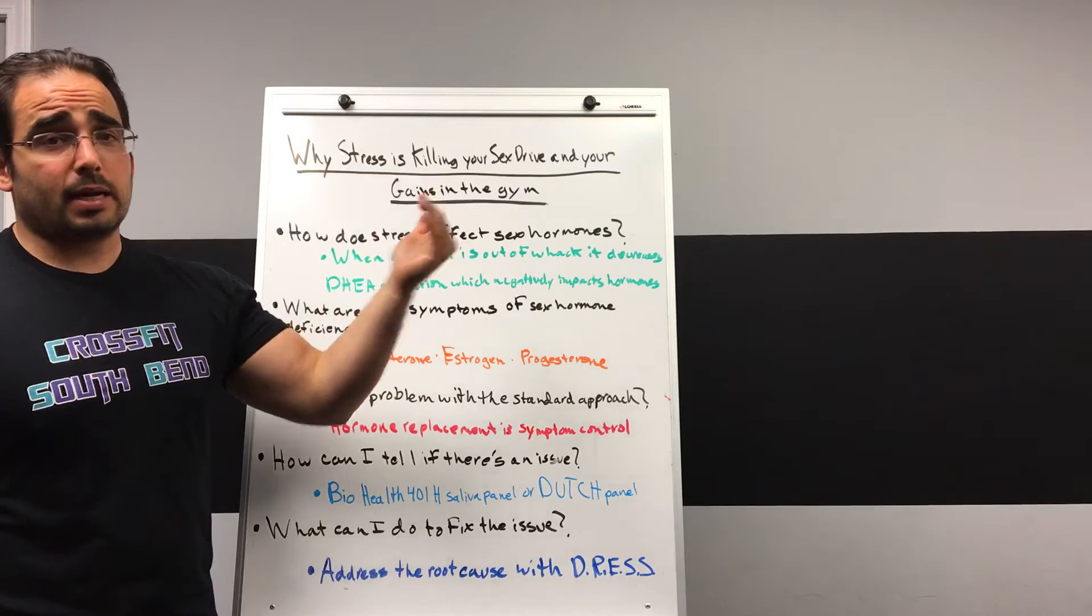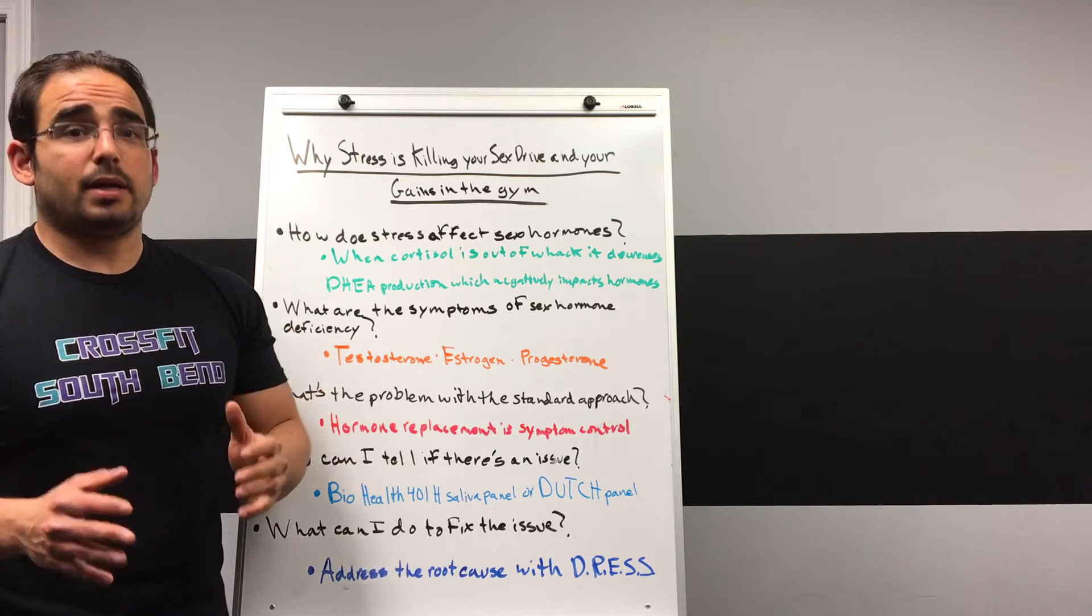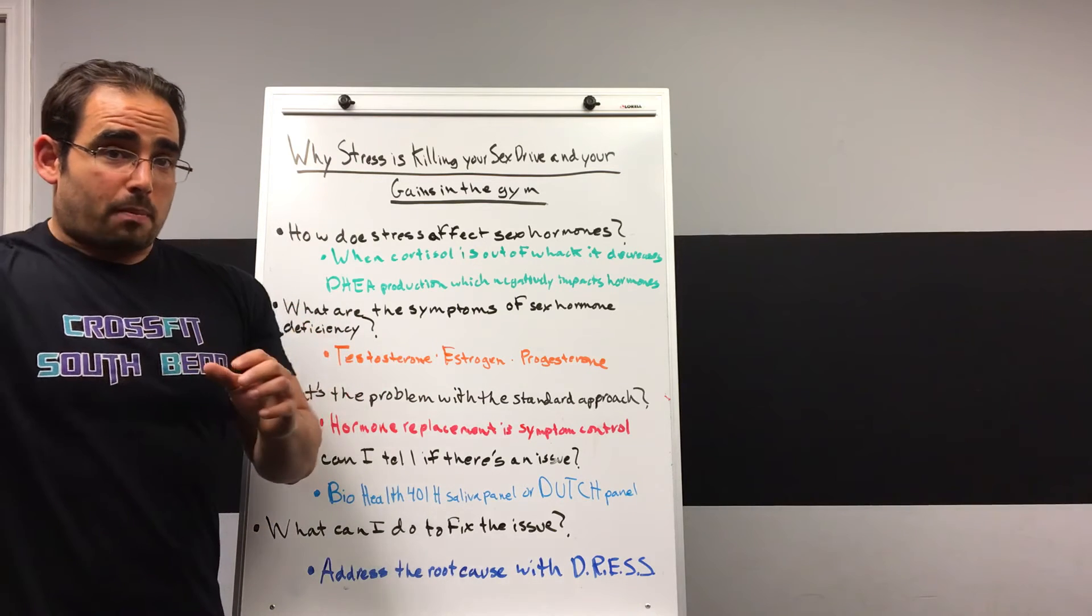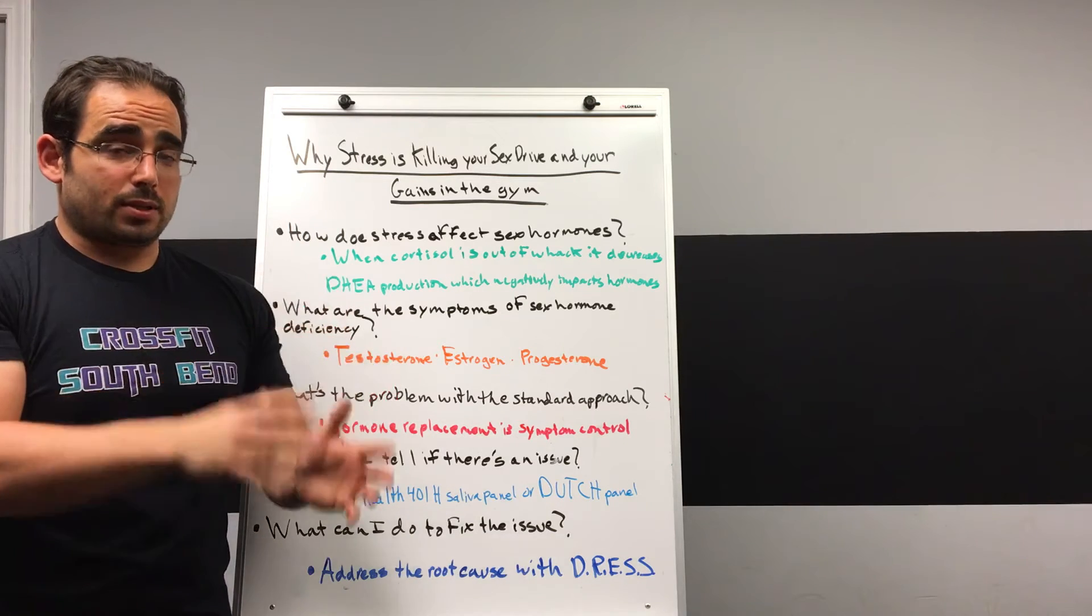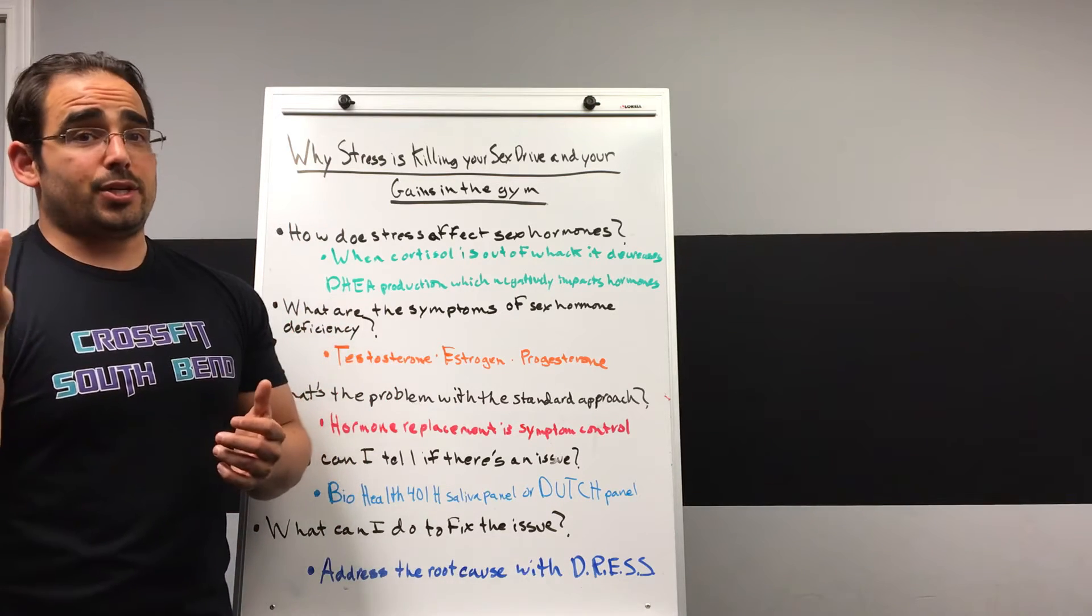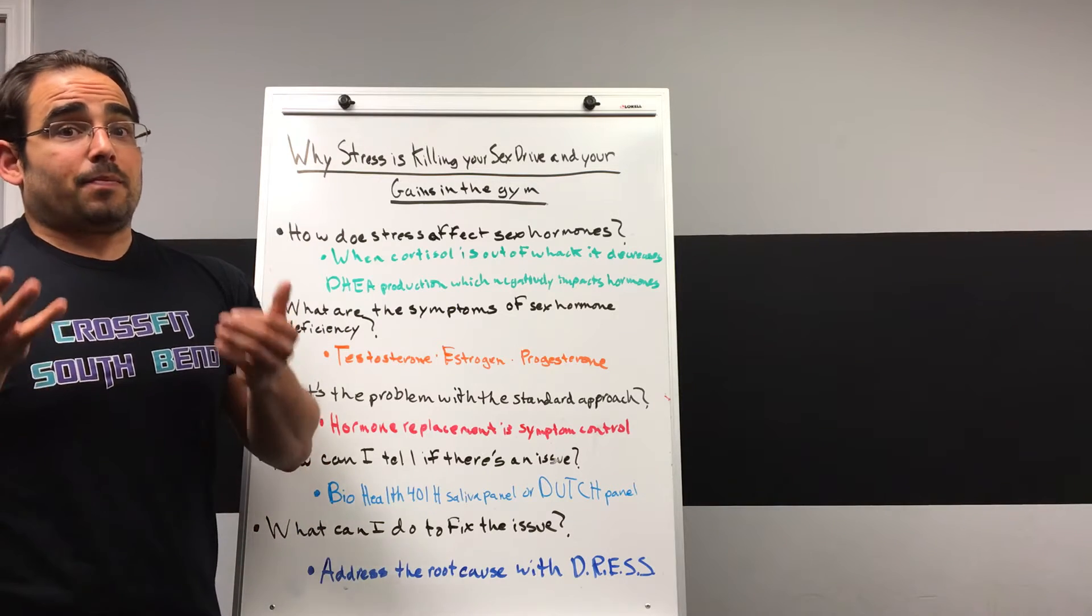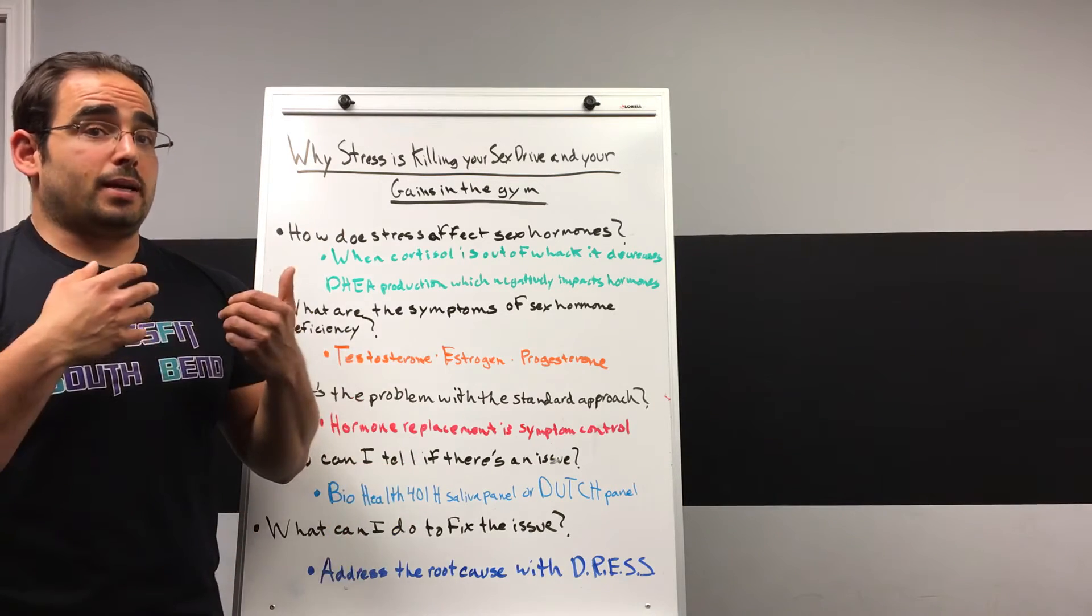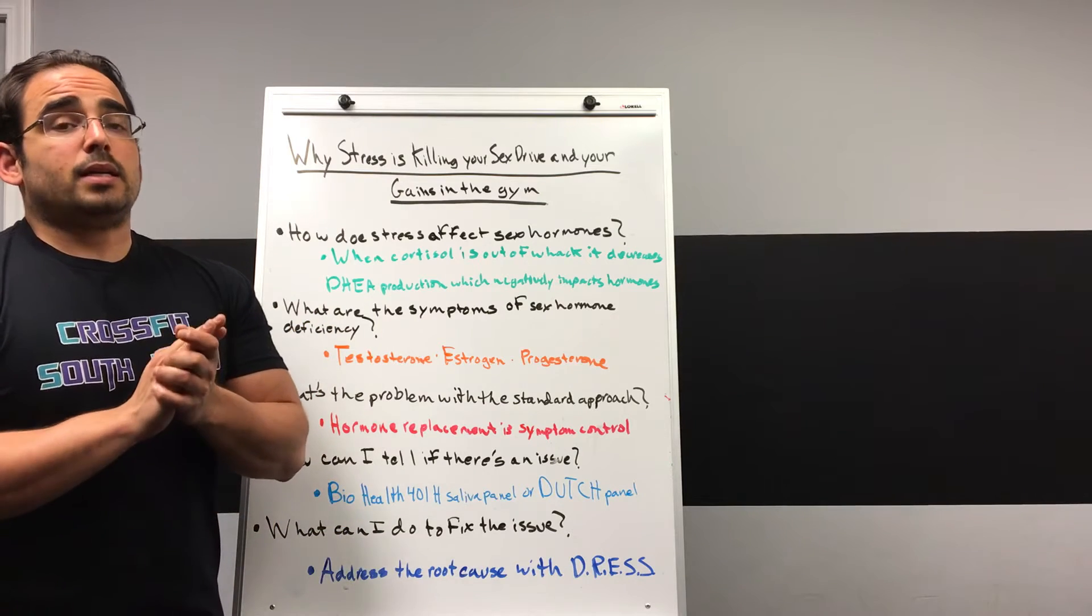Sometimes it can be really high, sometimes after that point it can be really low. In either scenario, your body is taking away pregnenolone to try to make more cortisol. And as a result, not enough DHEA is getting made, and if not enough DHEA is getting made, not enough testosterone and estrogen is getting made, and that can lead to all sorts of sex hormone deficiencies.